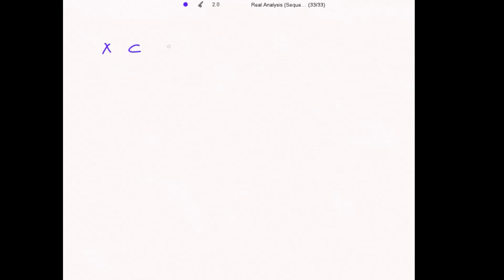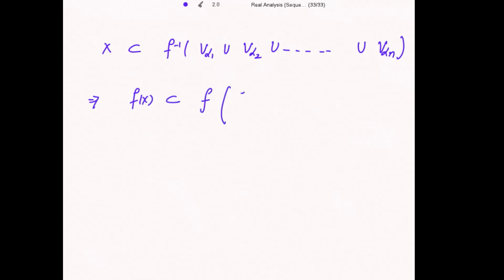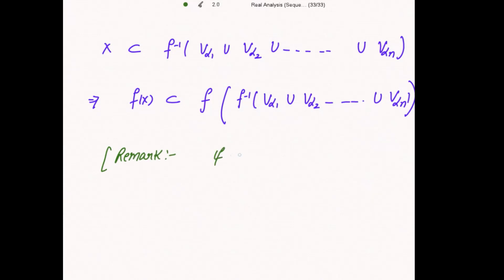So X is a subset of f inverse(V_α₁ union V_α₂ union ... union V_αₙ). This implies f(X) is a subset of f of f inverse(V_α₁ union V_α₂ union ... union V_αₙ). Using the second remark — if B is a subset of Y then f(f inverse(B)) is a subset of B — and considering this entire union as B: